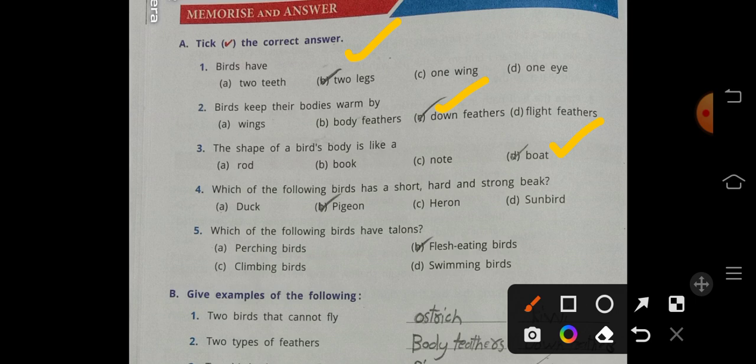Which of the following birds has a short, hard, and strong beak? Pigeon has a short, hard, and strong beak so they can crush the seeds and eat the grains.